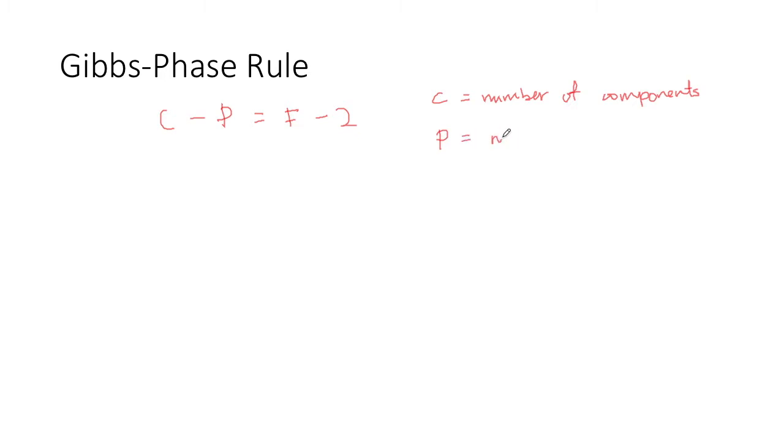P is the number of phases and F is the degree of freedom.